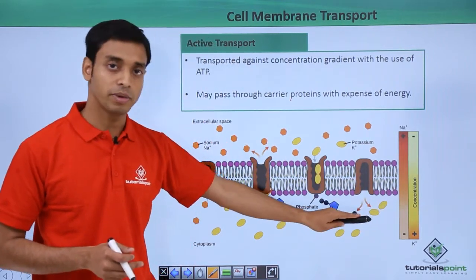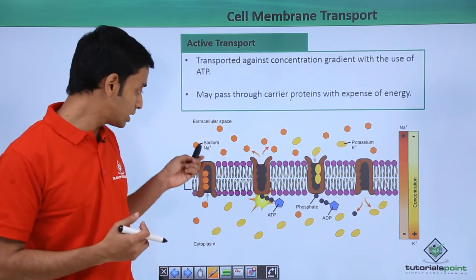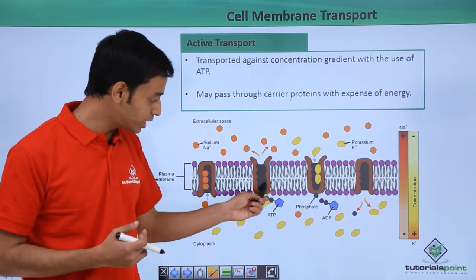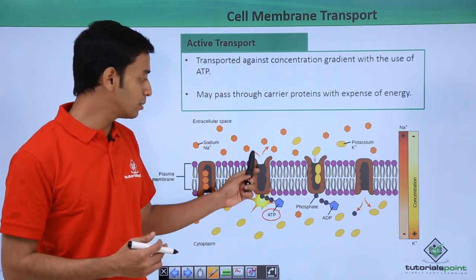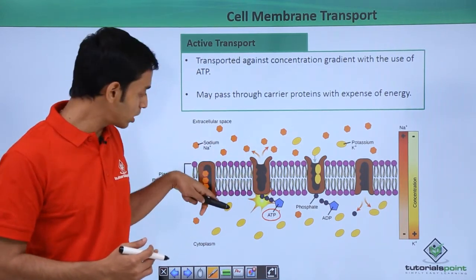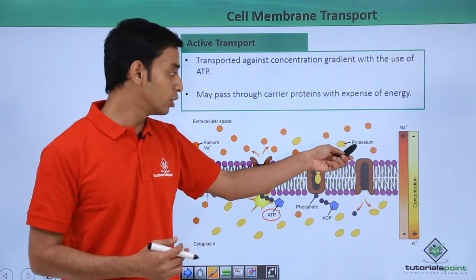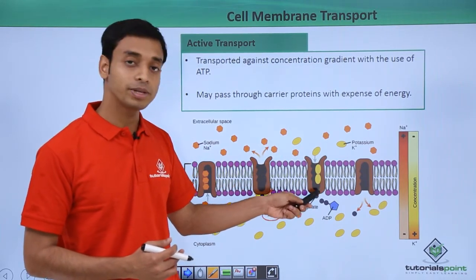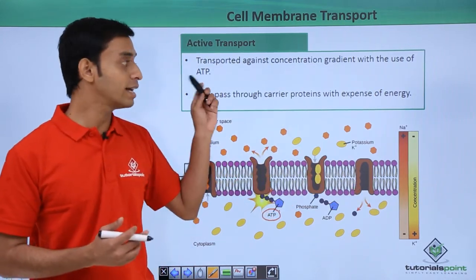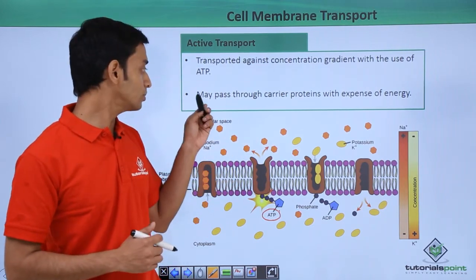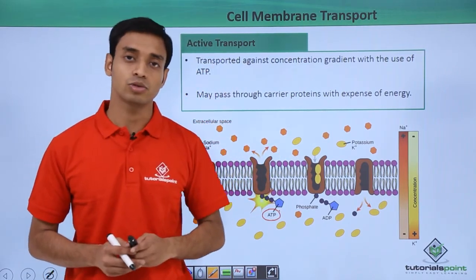The sodium concentration is higher on one side of the membrane while potassium concentration is higher on the other side. These channel proteins hold the sodium molecules and, with the expense of ATP, force the movement of sodium towards the higher concentration — from lower to higher. Similarly, the channel proteins hold potassium and, with ATP expenditure, move potassium towards its higher concentration side — again against the concentration gradient. The molecules pass through carrier proteins with the expense of energy. This is the process of active transport.